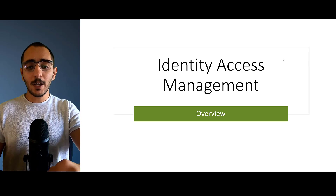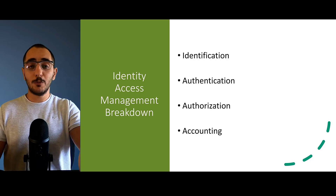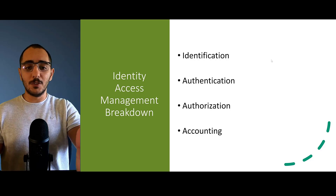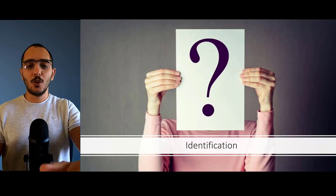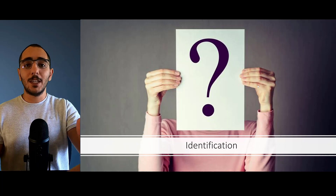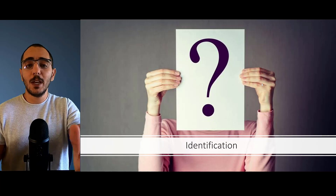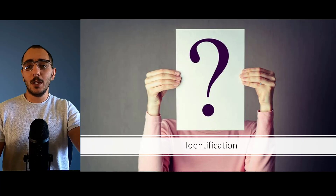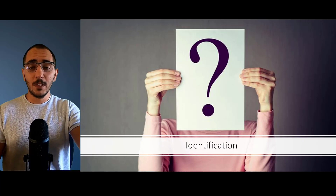Identity and access management is broken down into different pieces: identification, authentication, authorization, and accounting. Identification is about identifying the person who is accessing the system. For example, as an employee wanting to access a system, I need to be identified — the most common way is a username, which does not have to be private information.